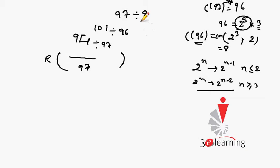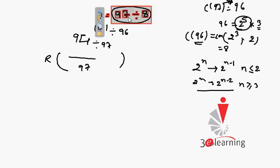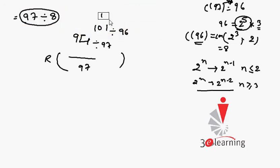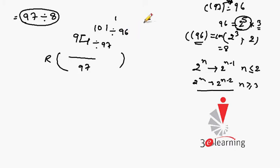We divide the base by 97, the upper power by the cyclicity of 97 (which is 96), and then by the cyclicity of 96 (which is 8). Solving first: 97 divided by 8 gives remainder 1. So we replace the top power with 1. Our question becomes 101 raised to power 1, divided by 96. The remainder of 101 ÷ 96 is 5.